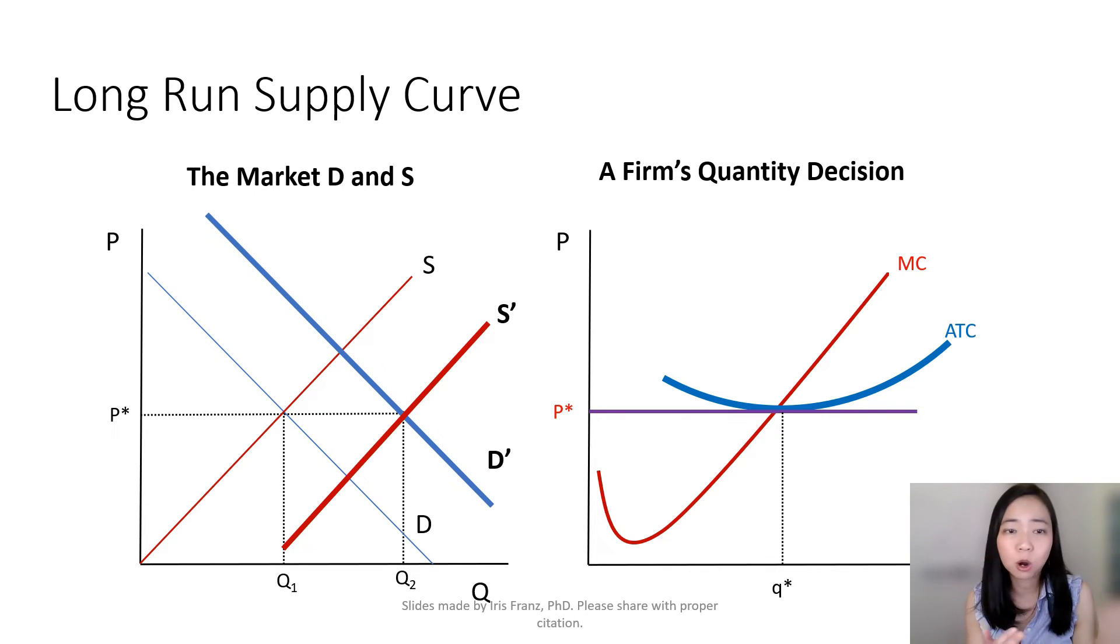So you see, in the long run, our price remains at P star. The only difference is this: When there is a higher demand, that means the market quantity is going to be higher at Q2.